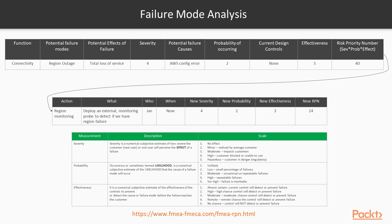Once we have our risk score, we ask: what can we do to reduce it? In this case, we could deploy regional monitoring. We're not changing the severity — if it happens, it will still be a four — and the probability remains the same. What we can manage is the effectiveness, which reduces our Risk Priority Number by just under half. That's the kind of effect we're looking for.